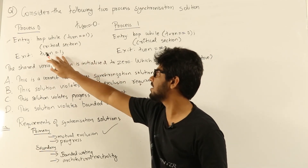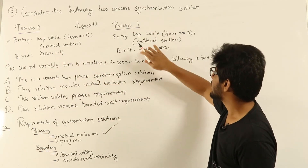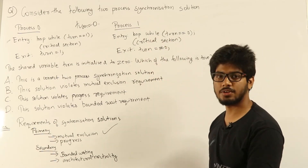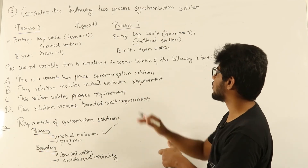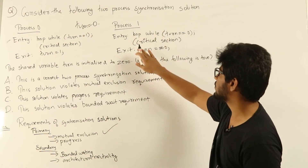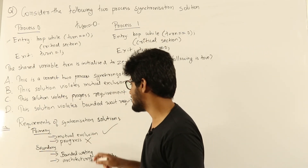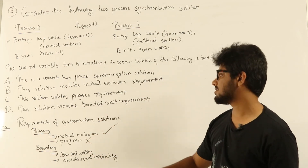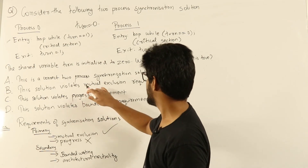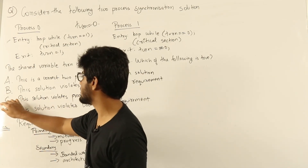Process 0 is doing something else, which means turn will not become 1 anytime soon. So process 1 can't enter the critical section even though it wants to, and there is no one else who wants to enter, but still it is blocked. That means the progress condition is not satisfied — process 1 wants to enter, no one else wants to enter, but still process 1 can't. So this is not a proper synchronization solution. Looking at the options, option C — this solution violates the progress requirement — is the right answer.